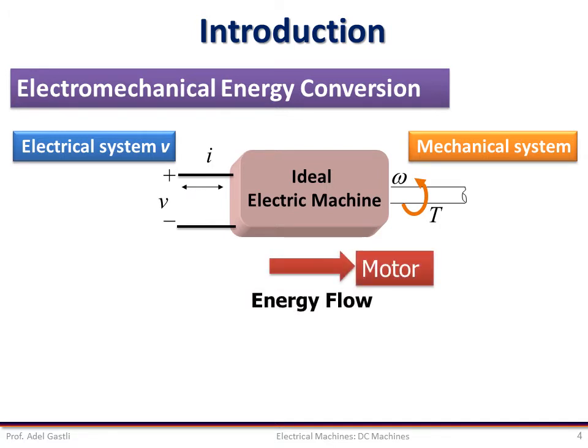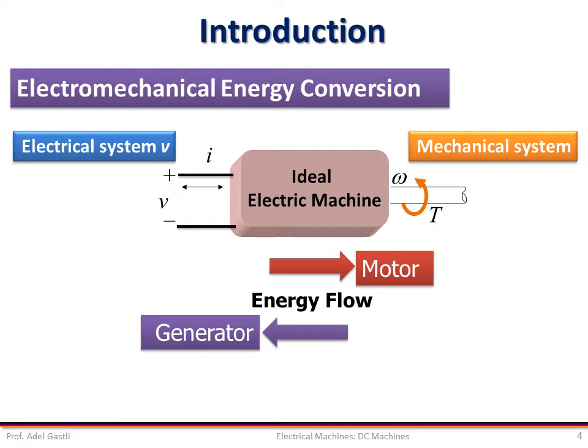As mentioned earlier, if the energy flows from the electrical source to the mechanical shaft, then the machine operates as a motor. And if the energy flows from the mechanical shaft to the electrical terminals, then the machine operates as a generator.